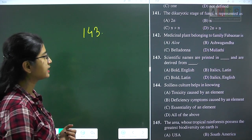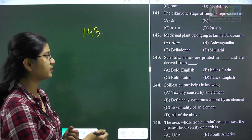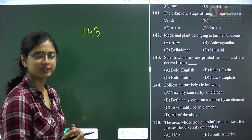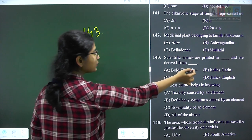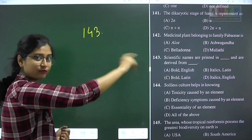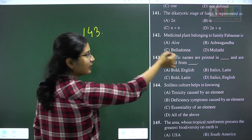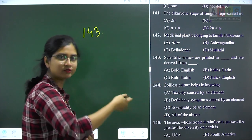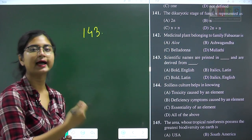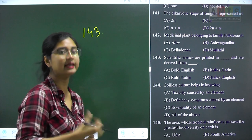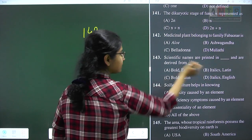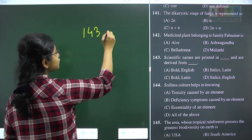Question 143: scientific names are printed in italics and are derived from Latin. This is one of the base rules of binomial nomenclature given by Linnaeus. Scientific names are always printed in italics, and either they are directly in Latin or derived from Latin. Question 143 answer is option B.